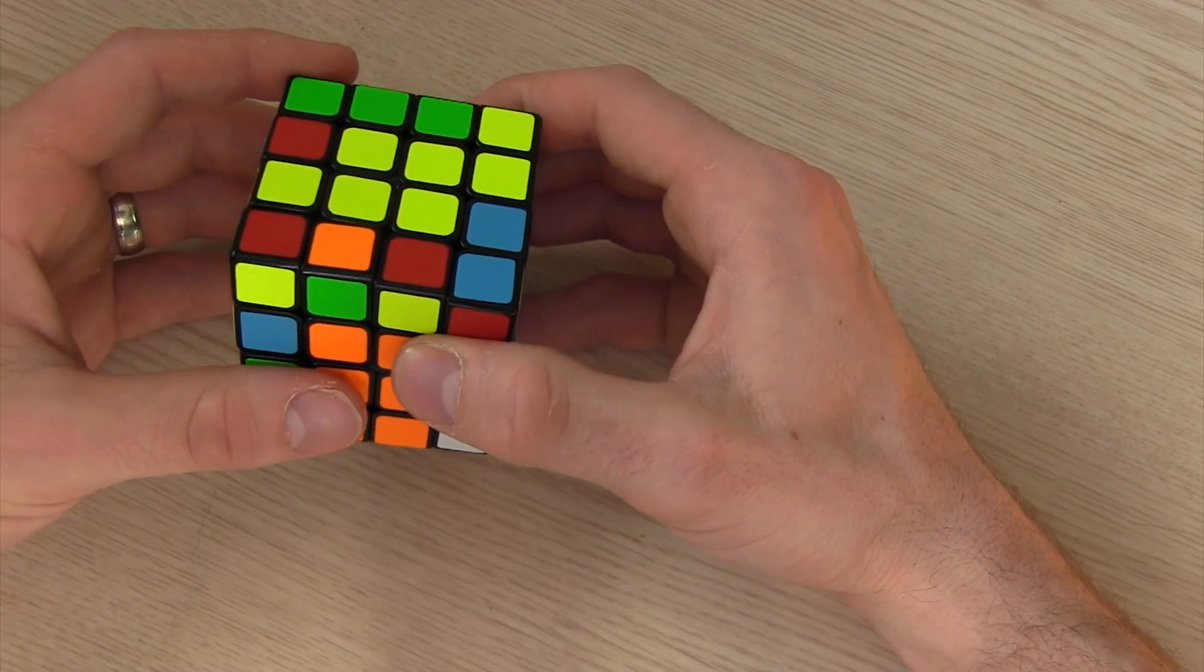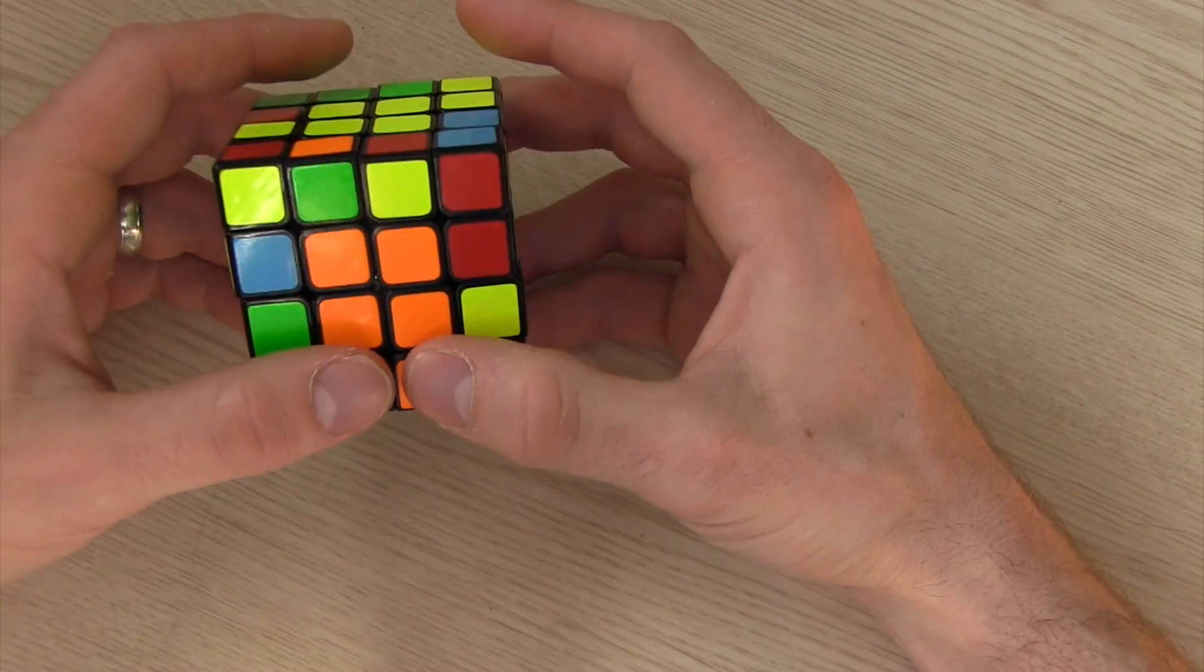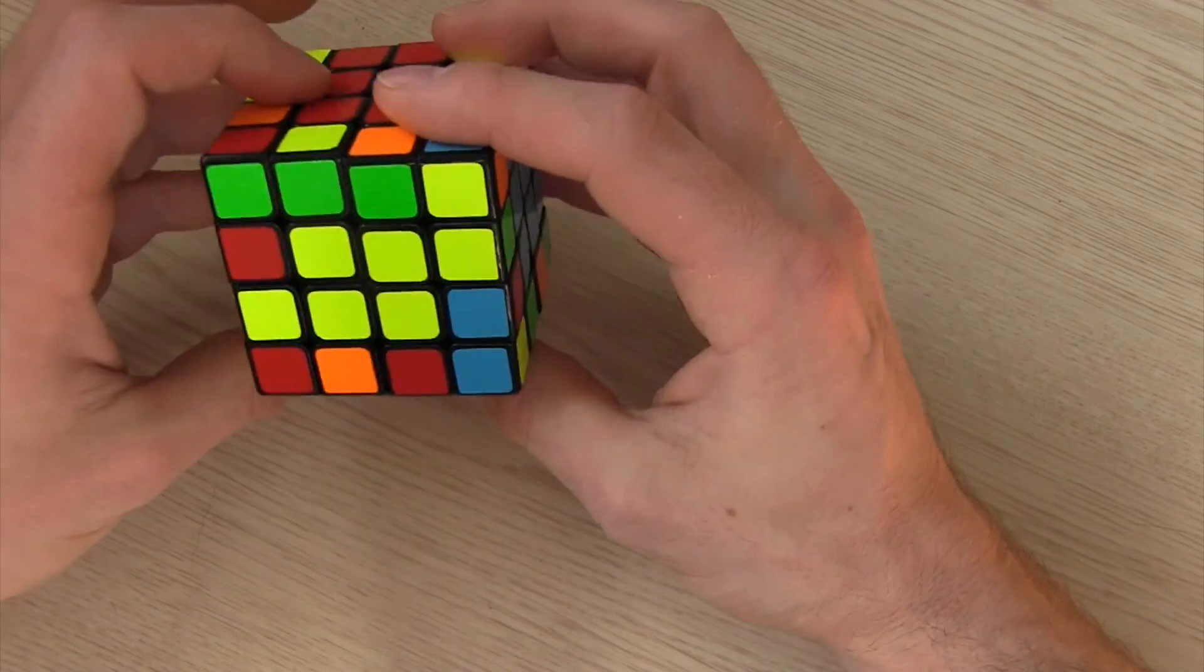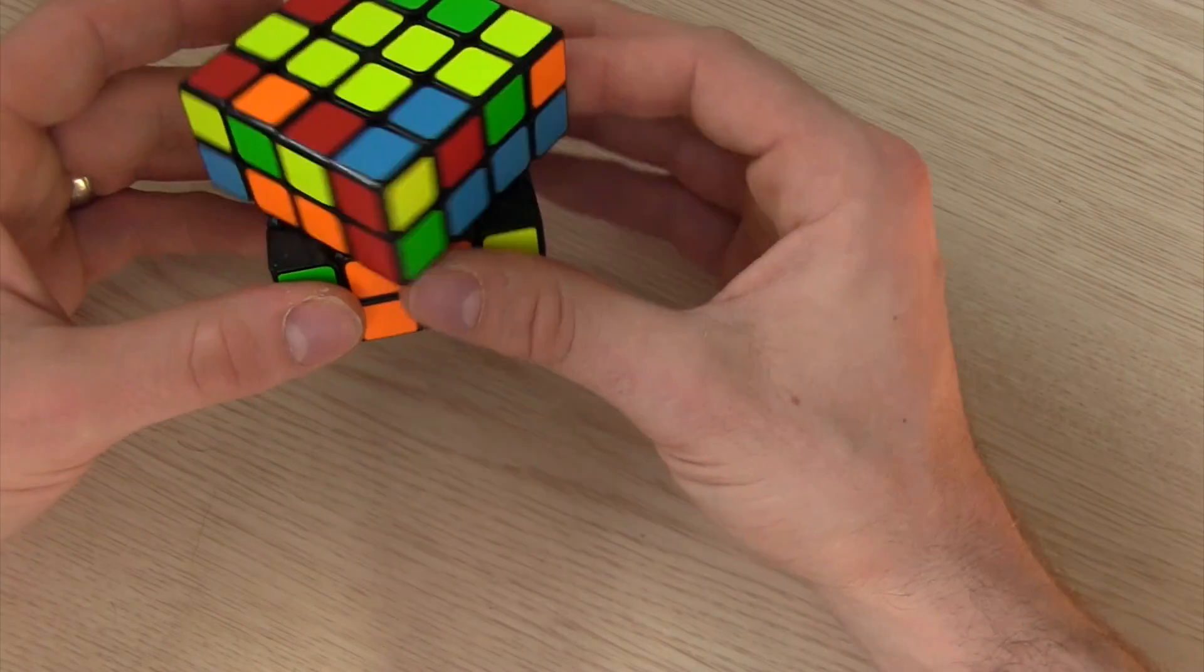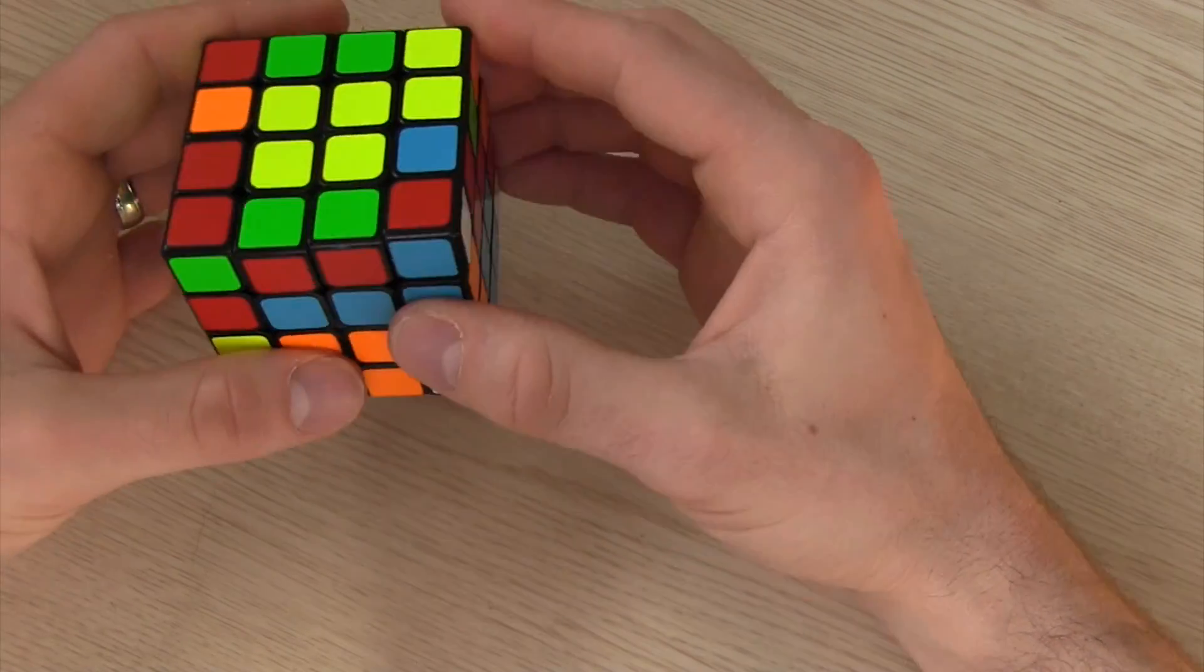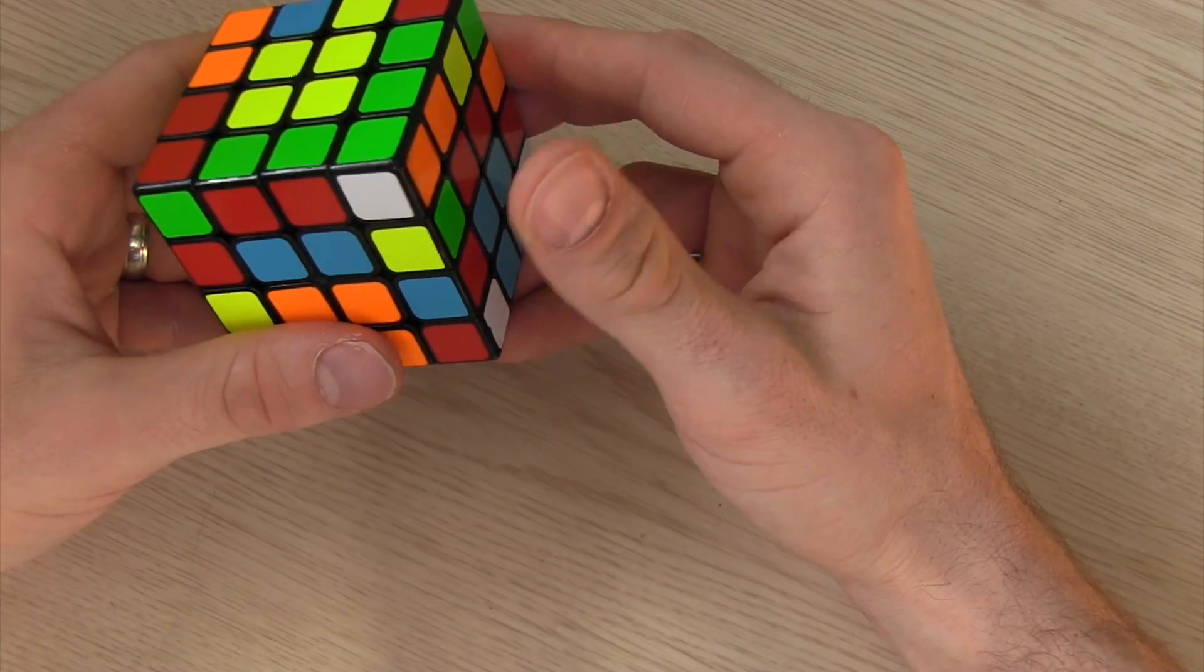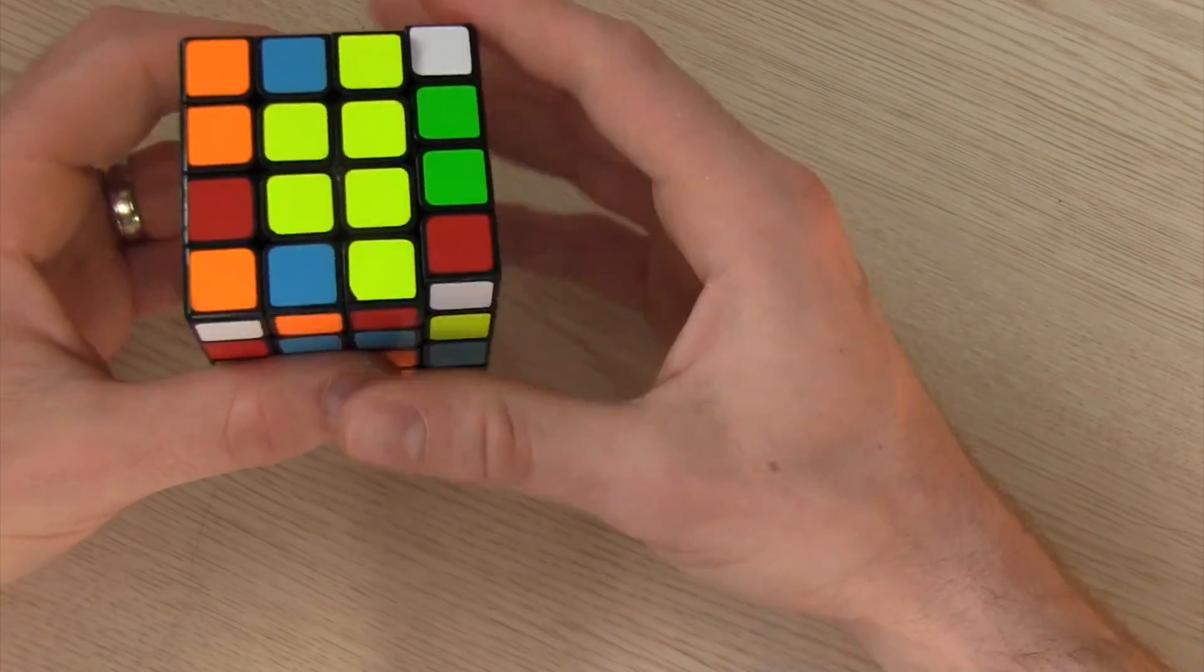After this you solve the rest of the edges but since this is already all set you don't have to worry about finding edges on the bottom layer. It's a lot easier to see them all. Again I'm behind a camera so please excuse any slowness that I might have in solving this.